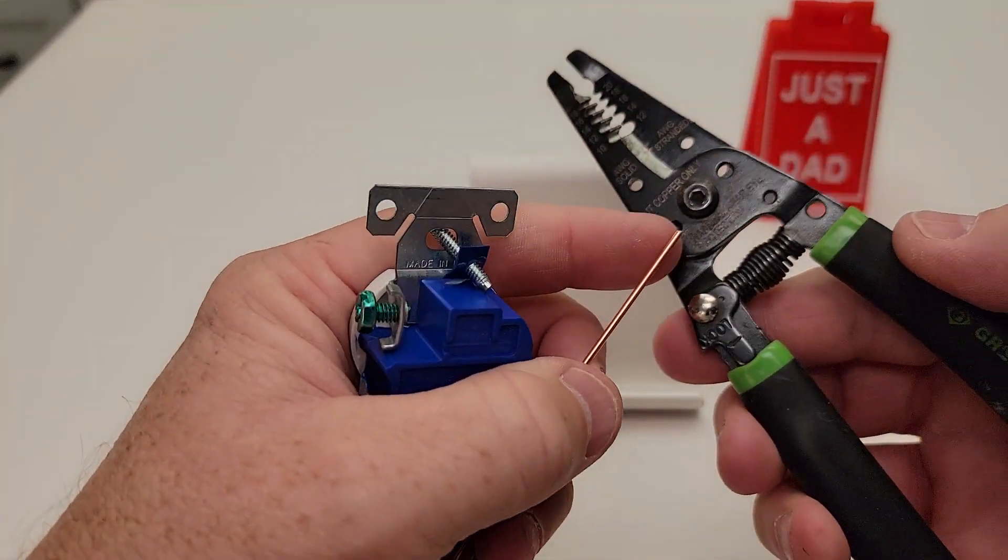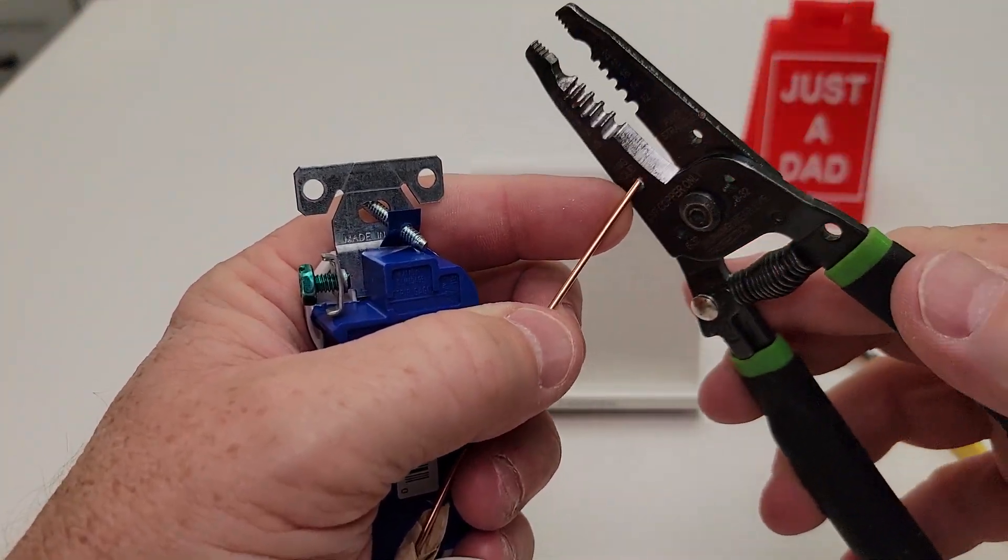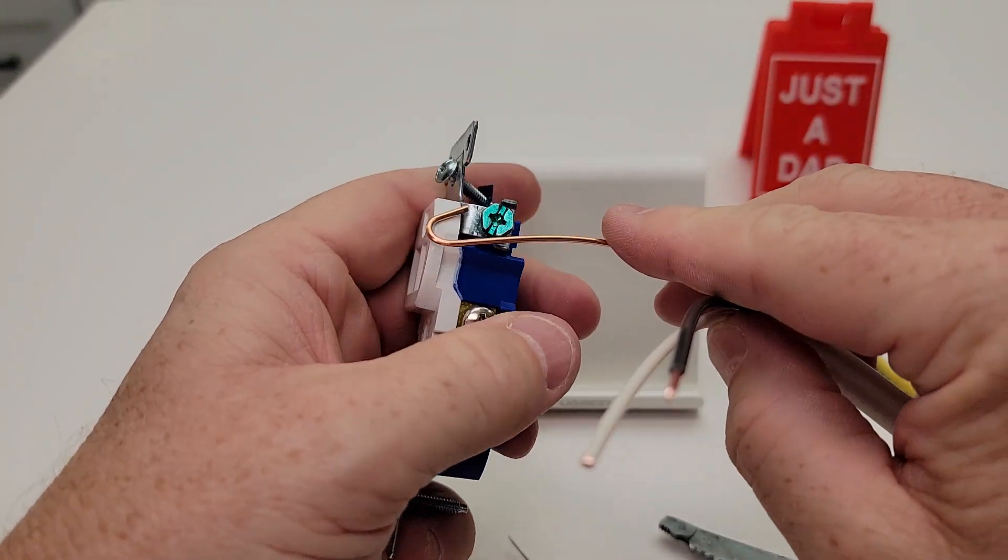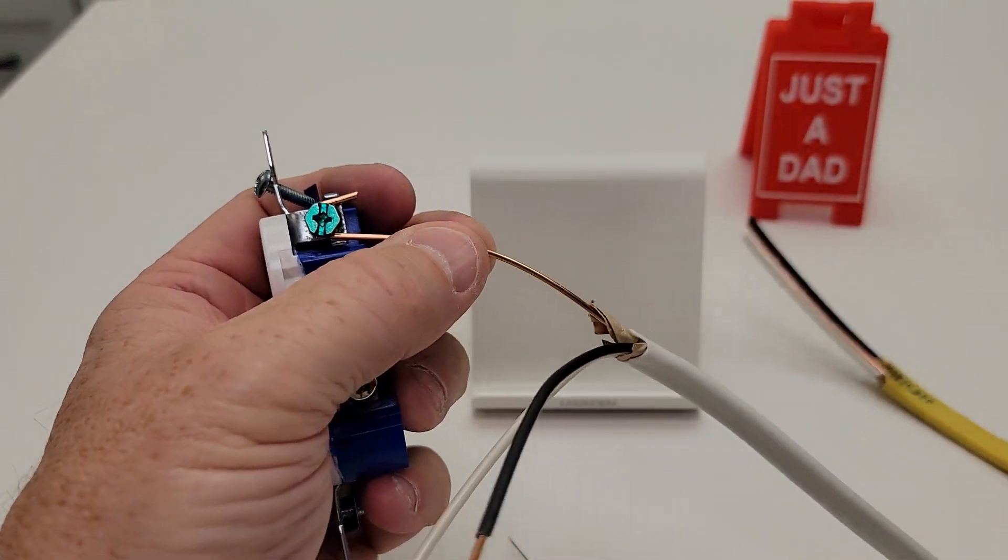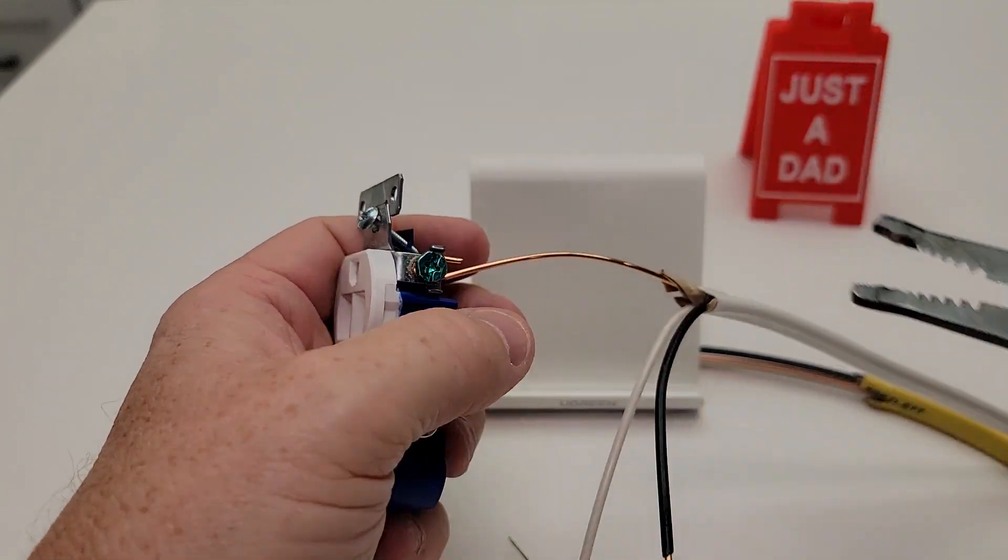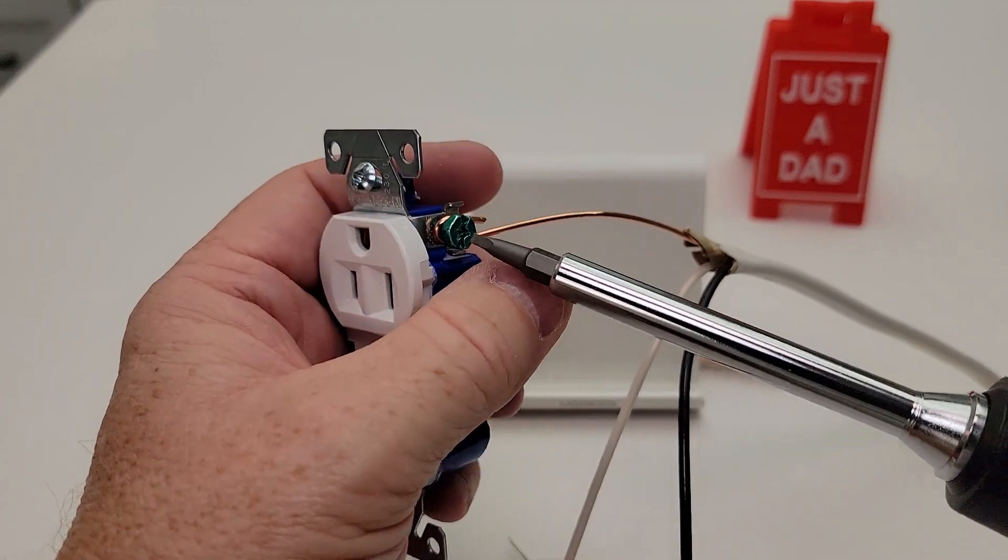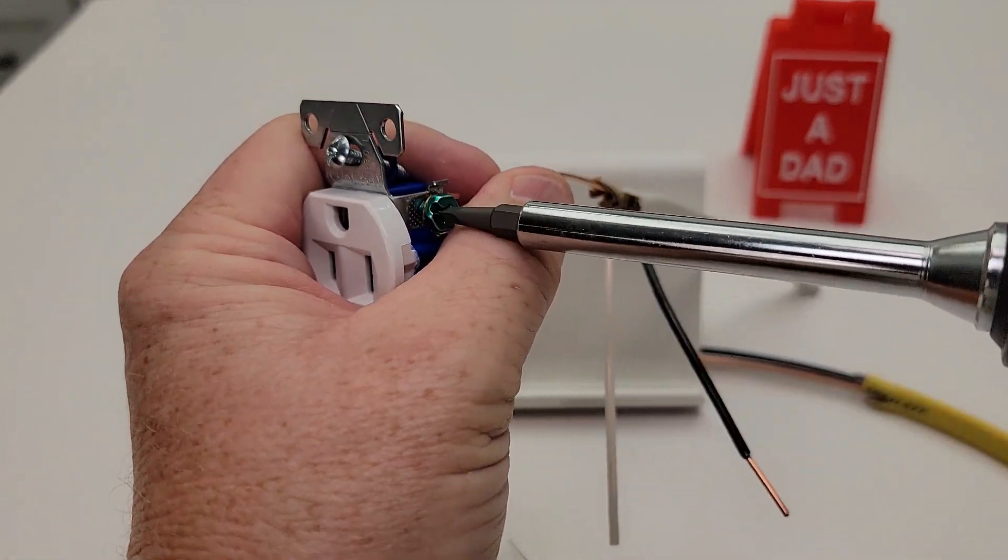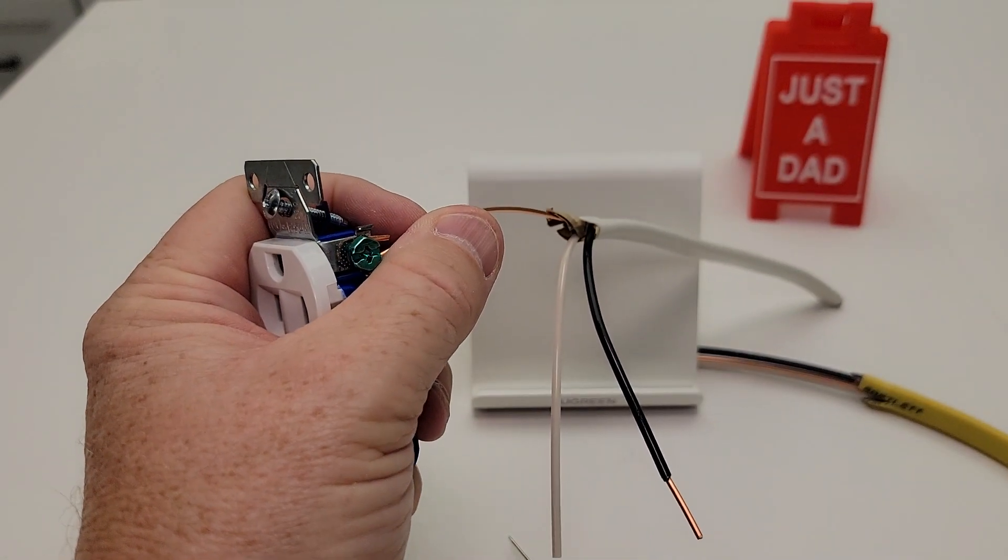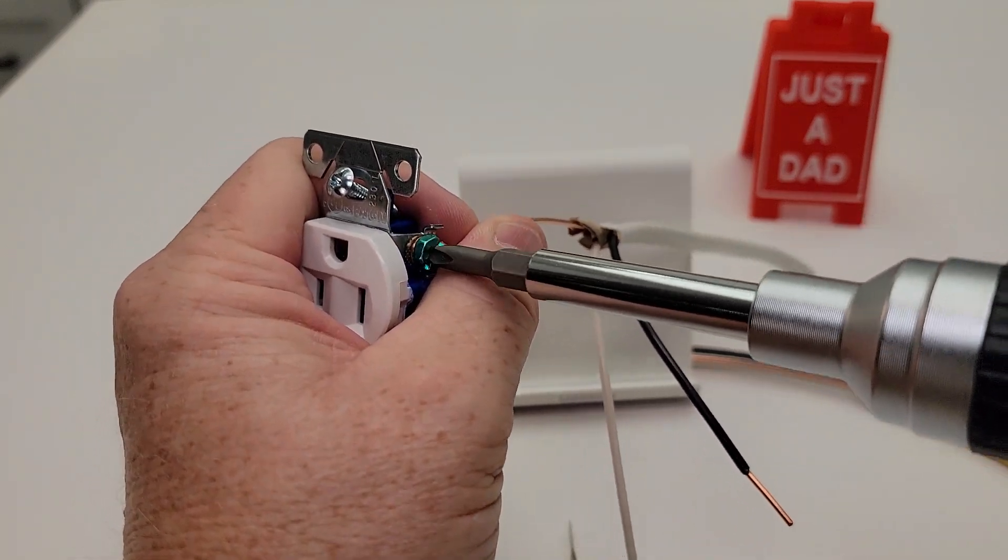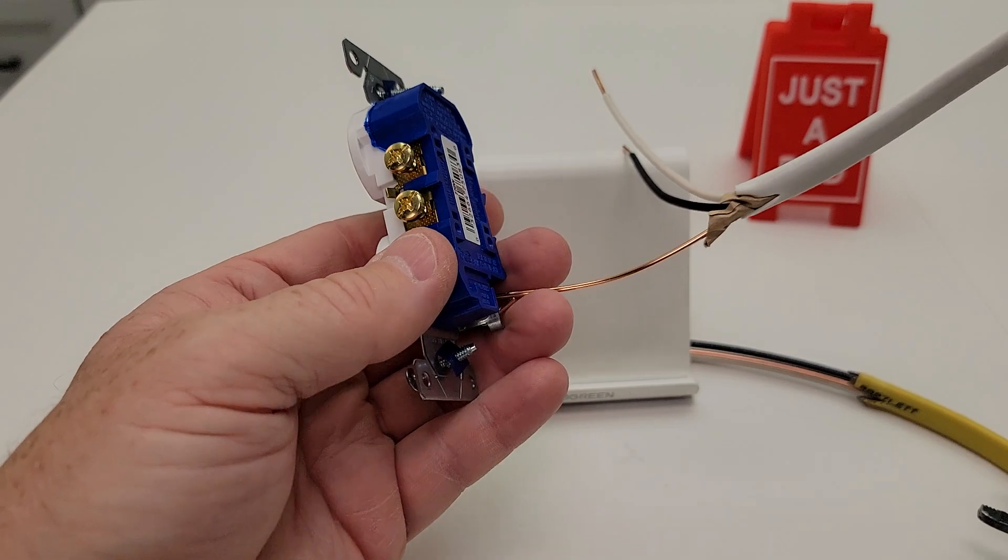Now let's do the ground wire. Very easy. A lot of your wire strippers have a tool where you can put a loop in it. Put a loop in your wire, stick it around that, and then I like to kind of pinch it close. Then you're going to tighten it down. You can use a number one square. I think a number one square bit works better, but you can also use a number two Phillips. Just tighten that down.